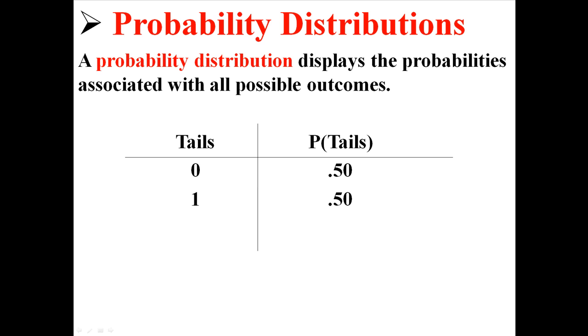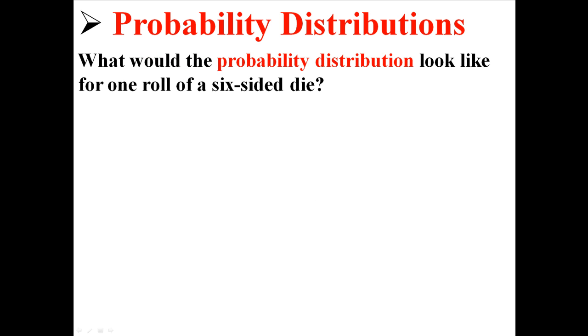Now we know this is a probability distribution because if we add up the probabilities, we'll get 100%. That means we have accounted for all possible outcomes. So now let's make another one. What would the probability distribution look like for one roll of a six-sided die?